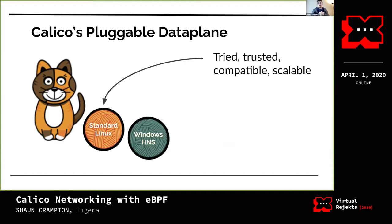Later on, we added Windows support to Calico, which is part of our commercial offering. The selling point there is it supports Windows, but it has a very different underlying architecture. The policy framework on Windows is very different, but we took the same data model and render it into the Windows data plane instead.